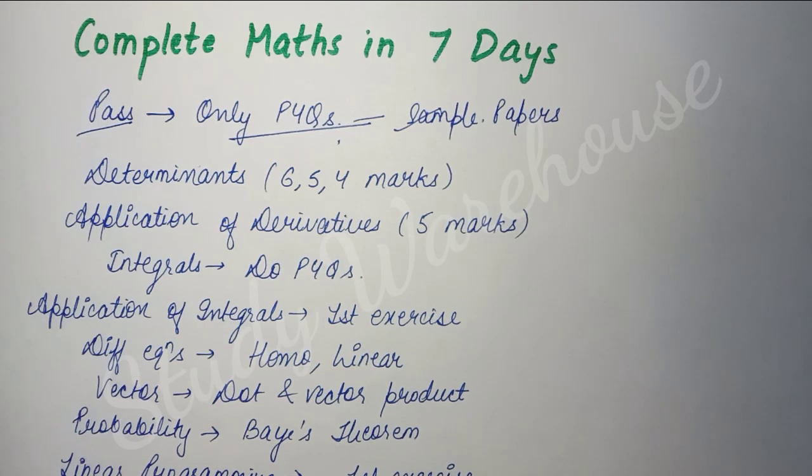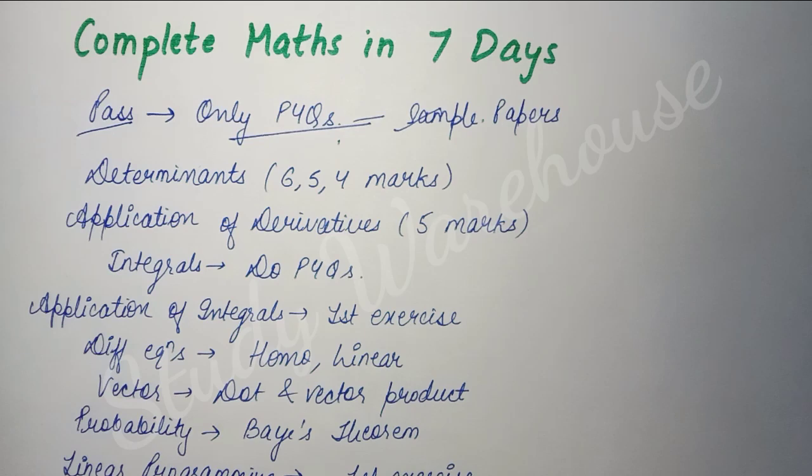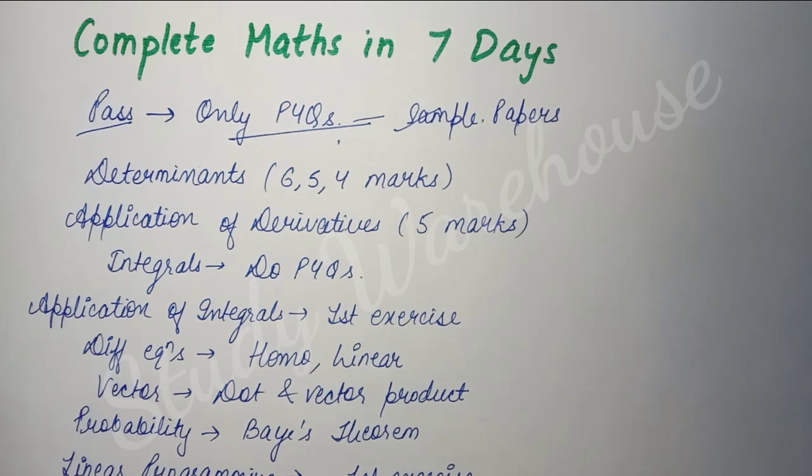Now let me tell you what the important topics are. First, from Determinants you get six, five, or four mark questions. In CBSE, five marks questions come, but in other boards like UK board or state boards, six mark questions also come. From Determinants, the last exercise is most important where you solve linear equations. If you don't know how to do it, I have provided math videos where you can see the important questions I've provided for almost all chapters.